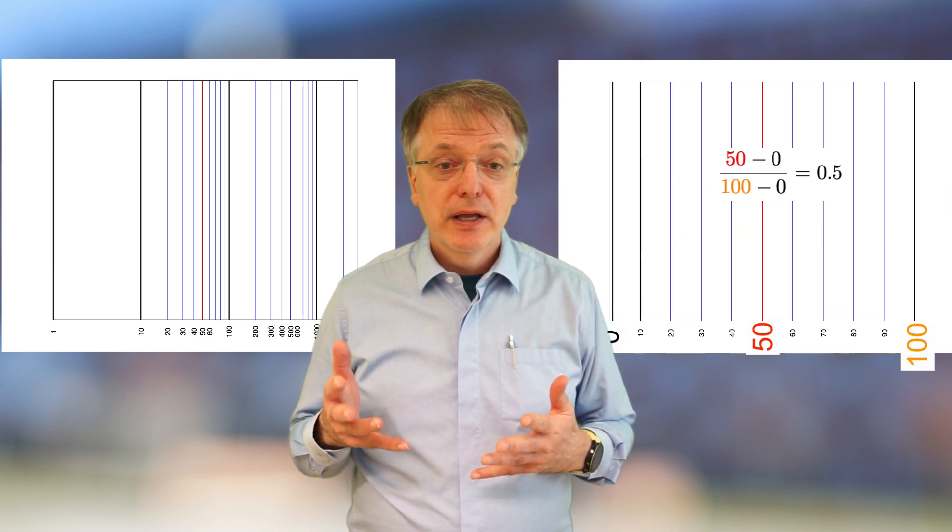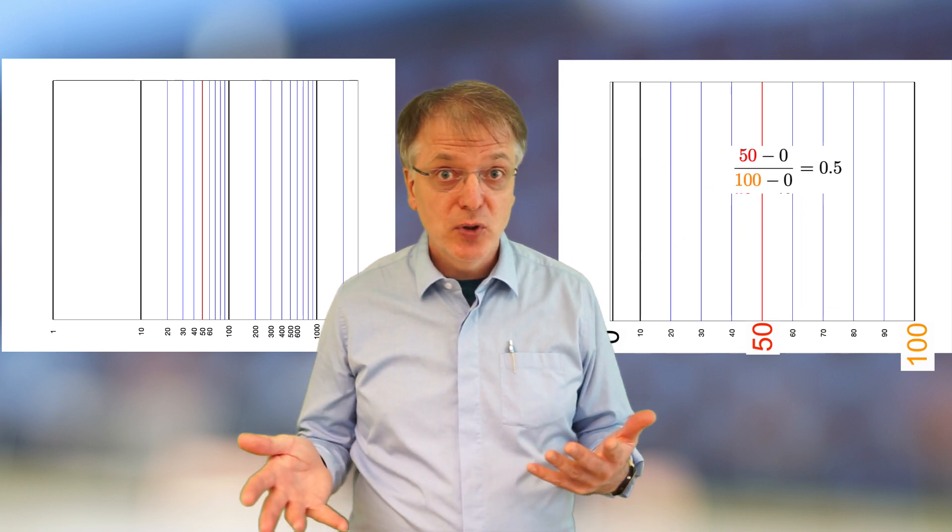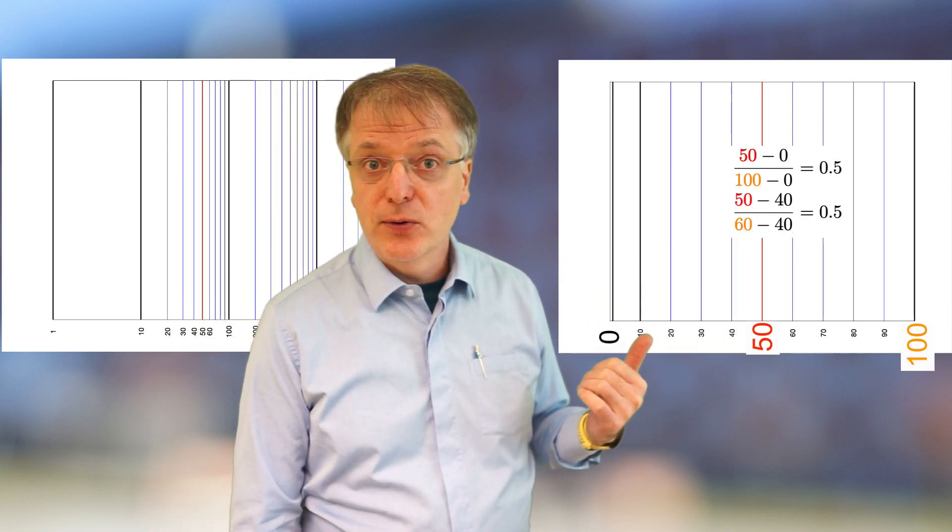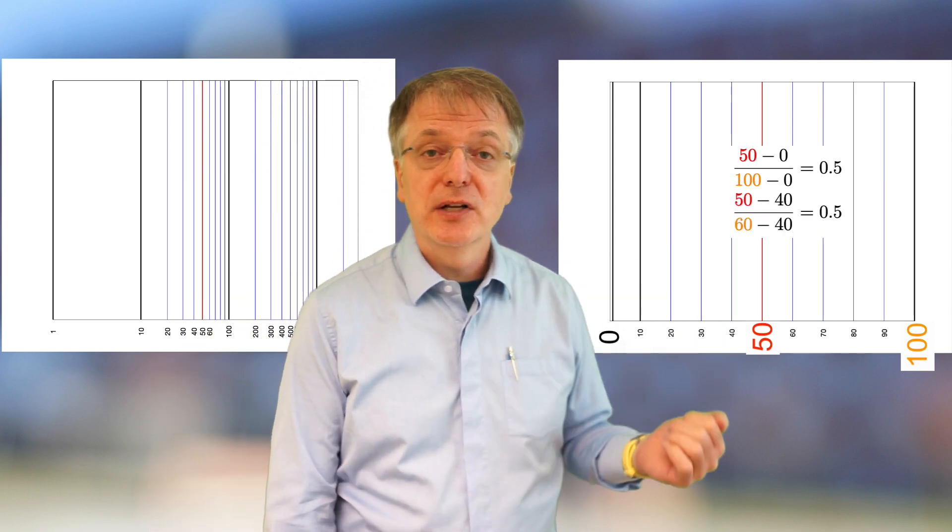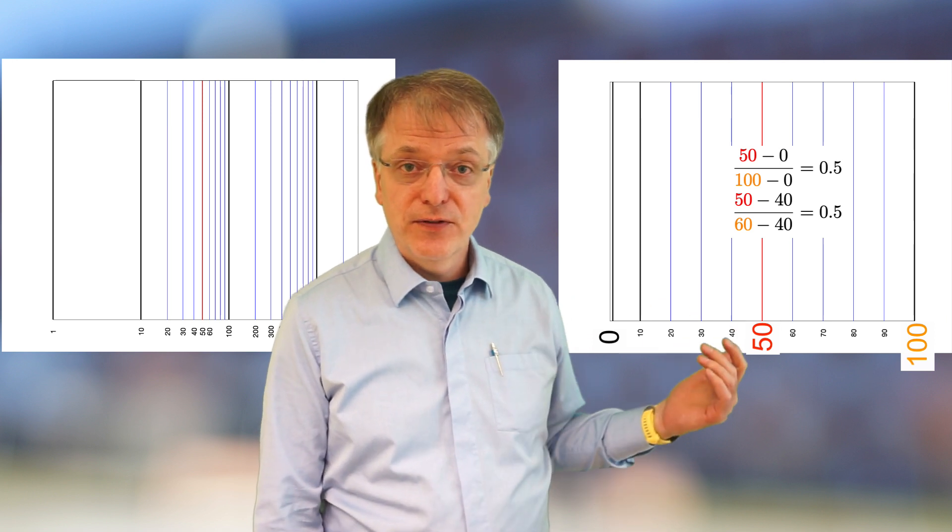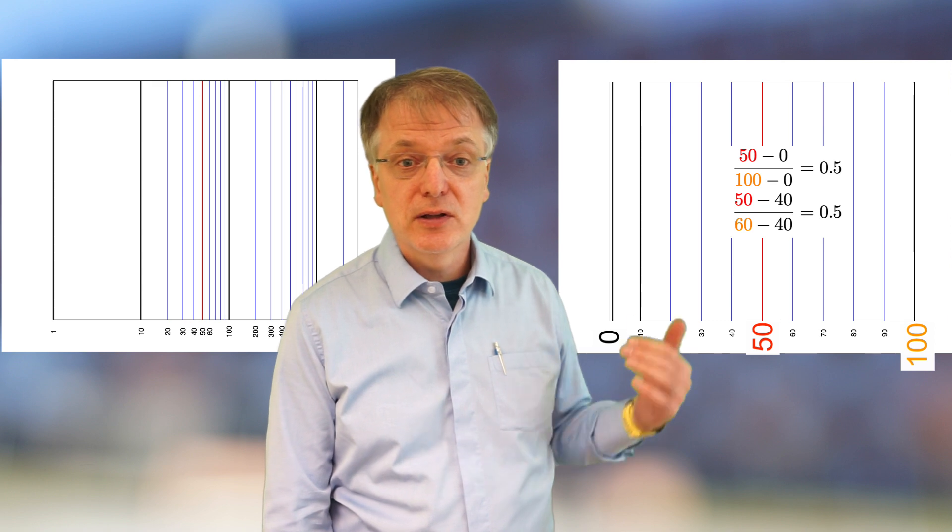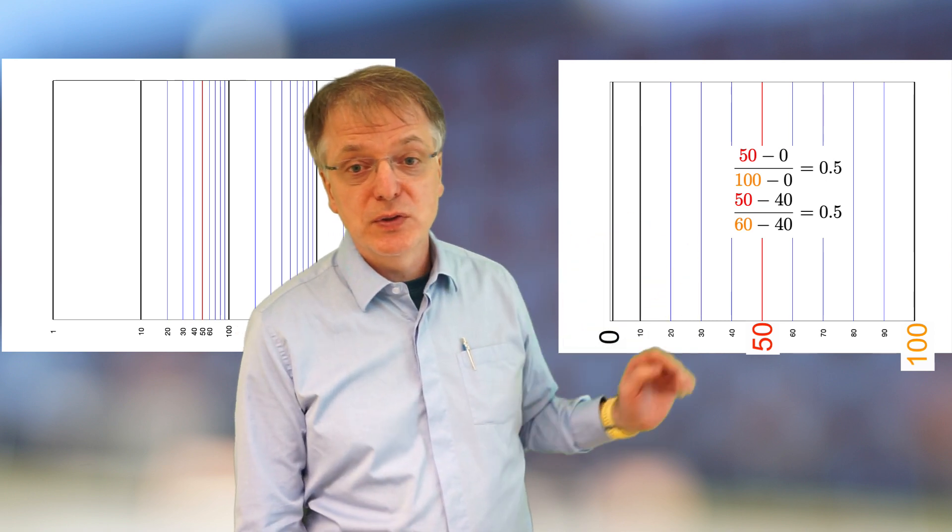Note that the same is perhaps obviously true for 40 and 60. 50 minus 40 is 10, 60 minus 40 is 20, thus 50 is 10 divided by 20, 0.5, or 50% of the way from 40 to 60.